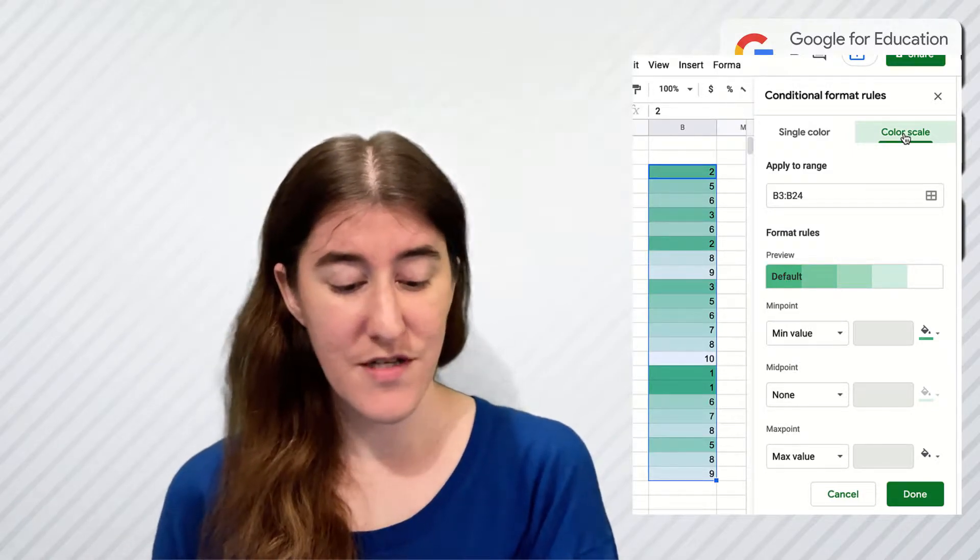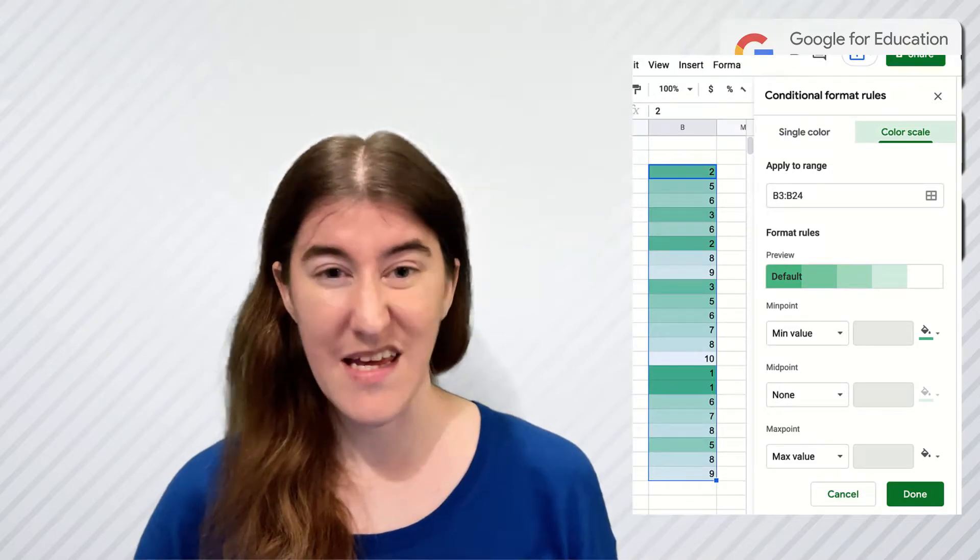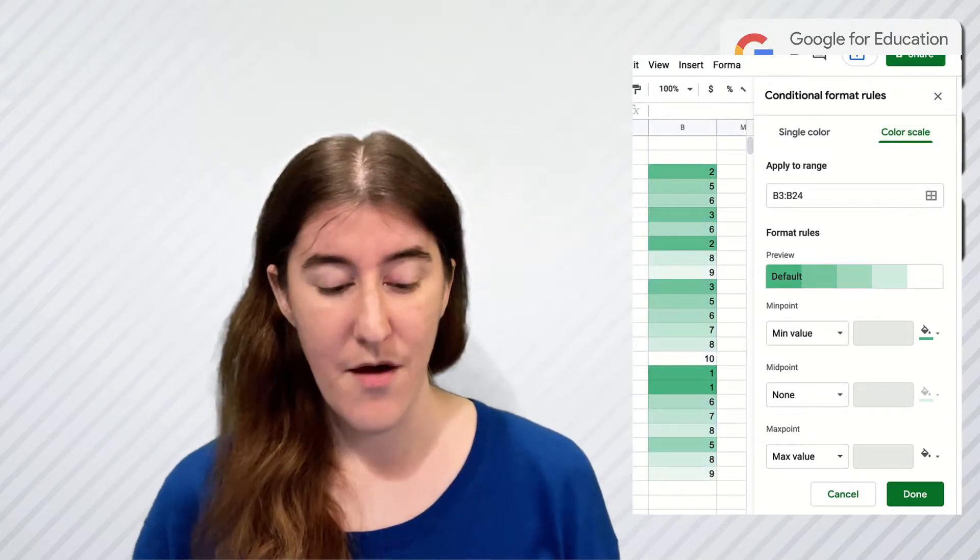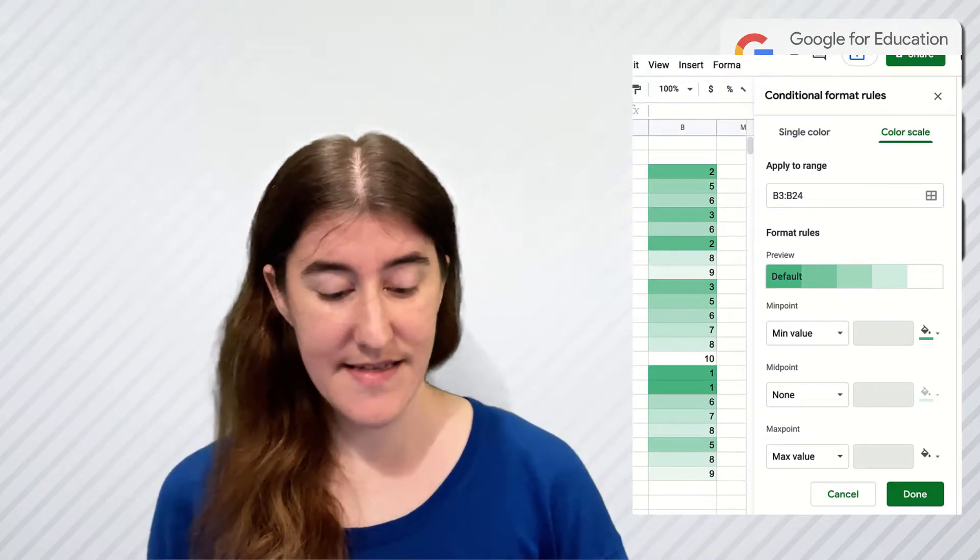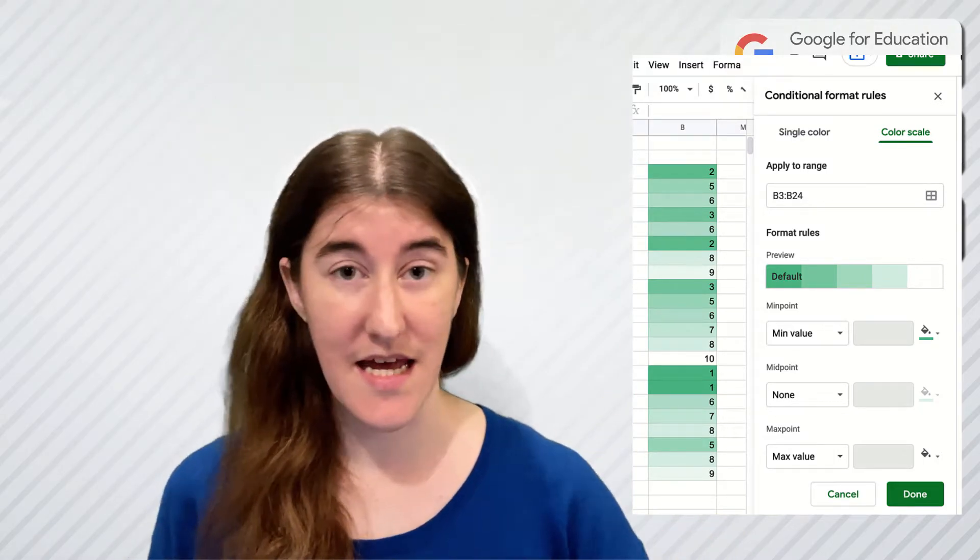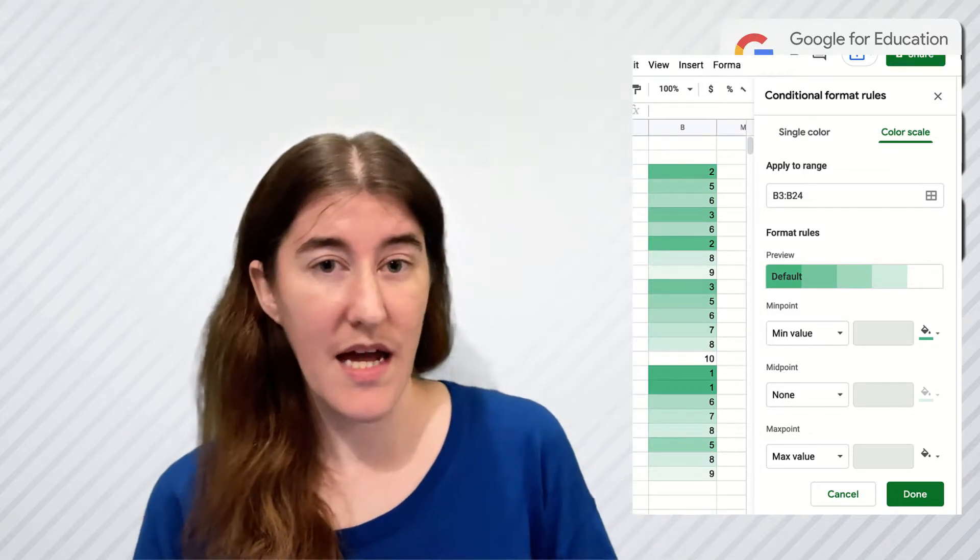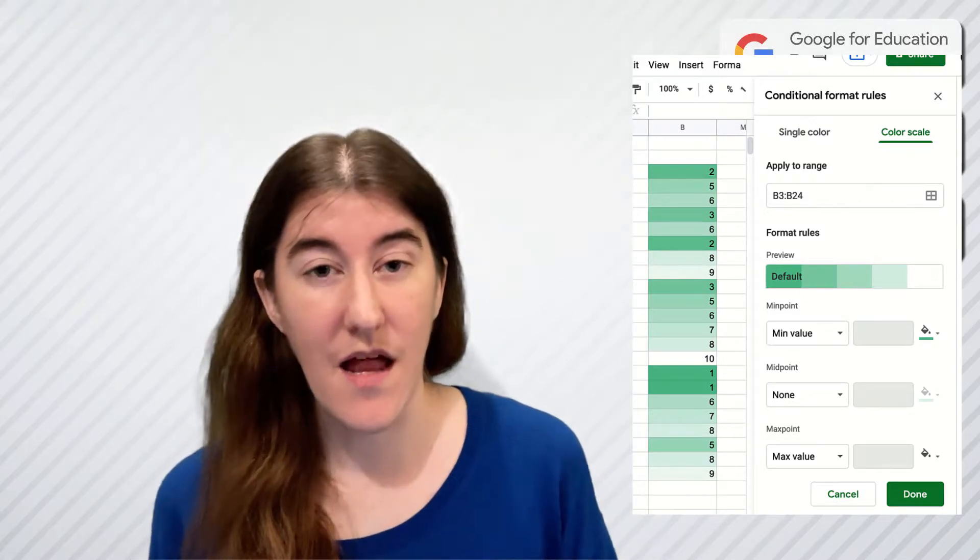If this works for you, awesome. I can see at a quick look, even clear once I click out between two and ten, or between one and ten, which numbers are the lowest, which numbers are the highest, just based on the color they are.